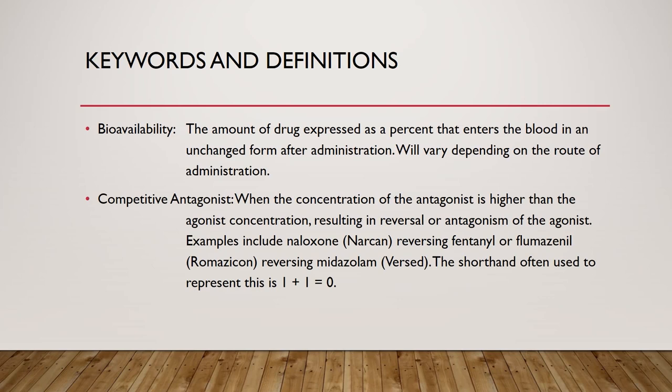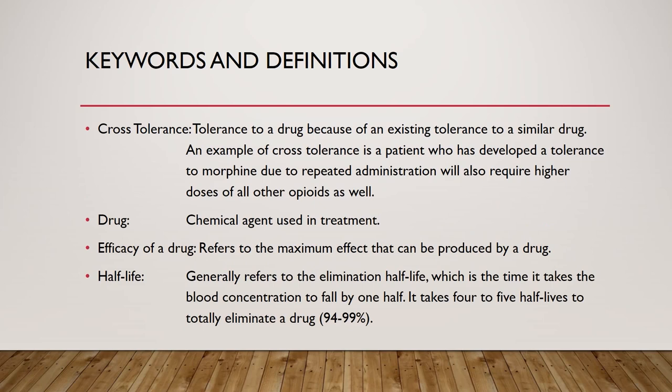Cross tolerance: tolerance to a drug because of an existing tolerance to a similar drug. An example of cross tolerance is a patient who has developed a tolerance to morphine due to repeated administration will also require higher doses of all other opioids as well.